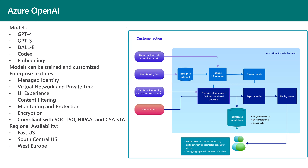Another extremely important feature of Azure OpenAI is that it can be deployed in many different regions. Currently it supports East US, South Central US, and Western Europe, with more regions to be added. This is extremely important if you want to provide AI features to your customers, because you can guarantee data safety and also performance by deploying an OpenAI instance near the customer in the same region as their tenant.